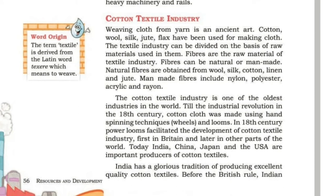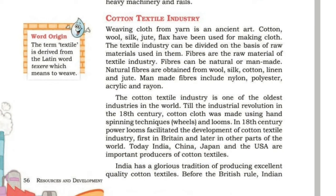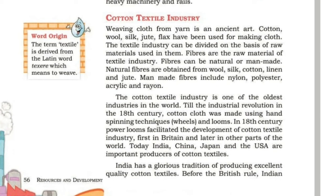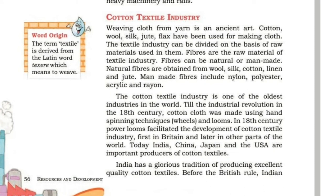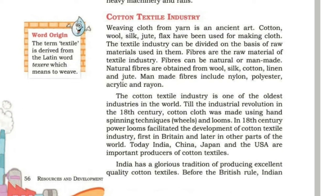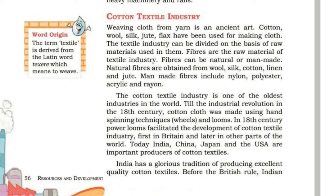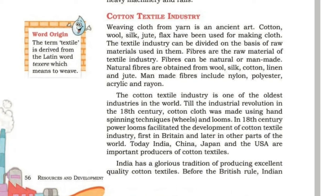The cotton textile industry — weaving cloth from yarn — is an ancient art. Cotton, wool, silk, jute are raw materials of the textile industry. The textile industry can be divided on the basis of raw materials used. Fibers are the raw materials of the textile industry and can be natural or man-made. Natural fibers are obtained from wool, silk, cotton, and linen.